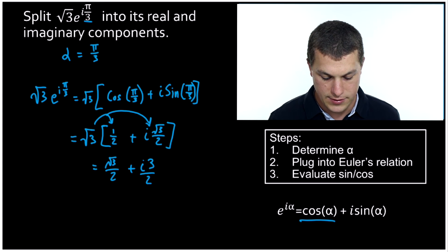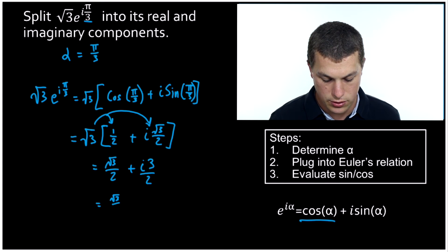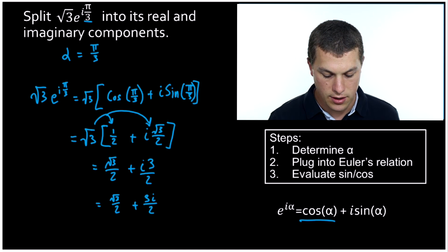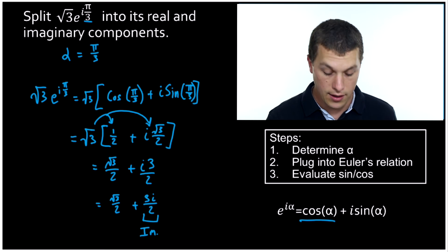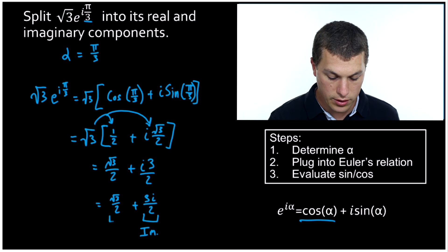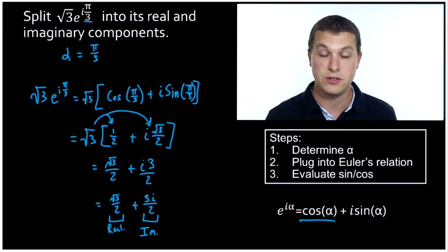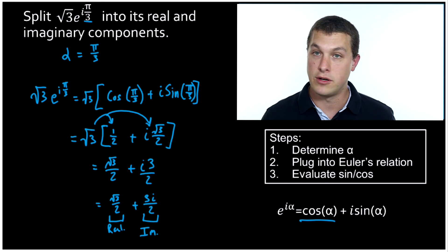Normally we would write this as square root of three over two plus three i over two. And that's our final answer. Here we've split it up into an imaginary part — the part containing i — and our real component, the part without i. This is how we split apart complex numbers: use Euler's relationship, figure out what alpha is, and plug it in.